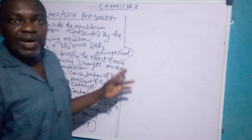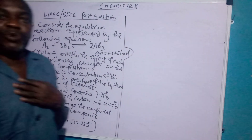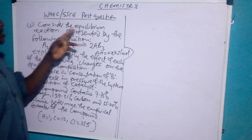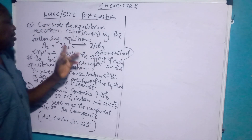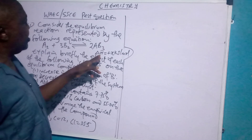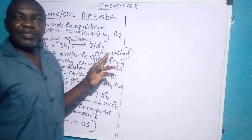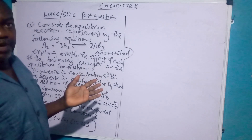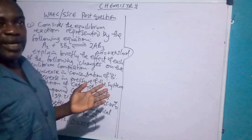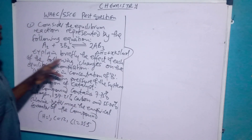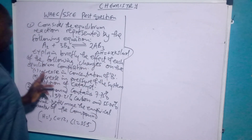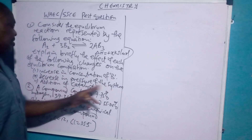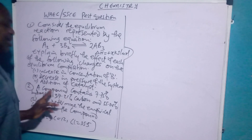Today we have a question I want to tackle — it's a past question we came across as we go through past questions in chemistry. The question says: consider the equilibrium reaction projected by the equation shown. Delta H is positive, meaning it's endothermic. If it's minus, it's exothermic. Remember, exothermic means it gives out heat to the environment or surroundings, while endothermic absorbs heat. Explain briefly the effect of the following changes on the equilibrium composition: increase the concentration of B, decrease in pressure of the system, addition of a catalyst.